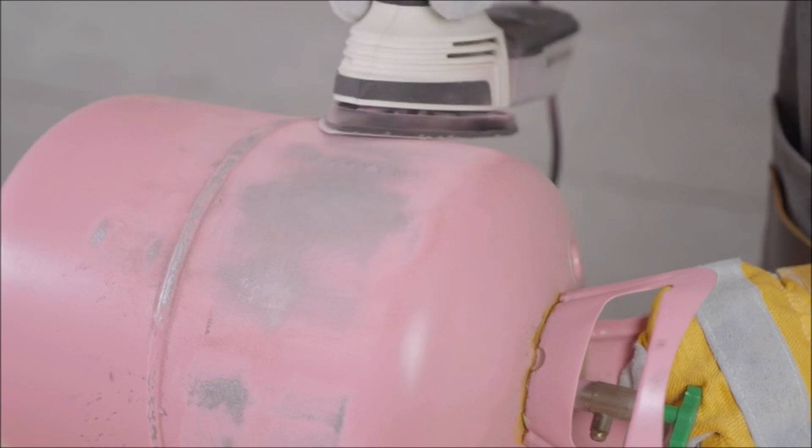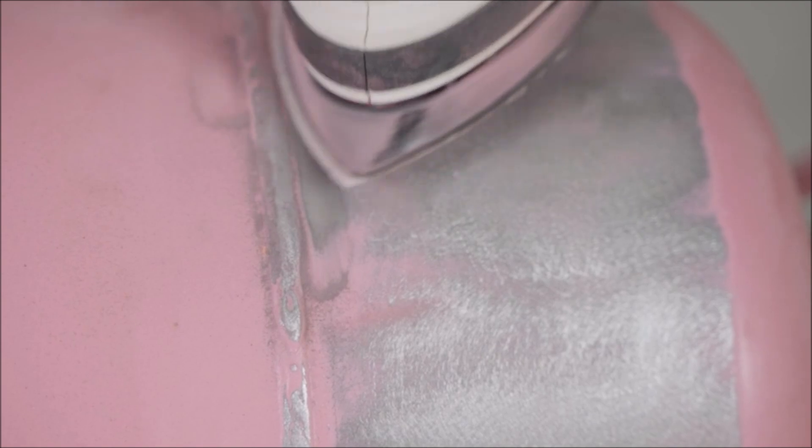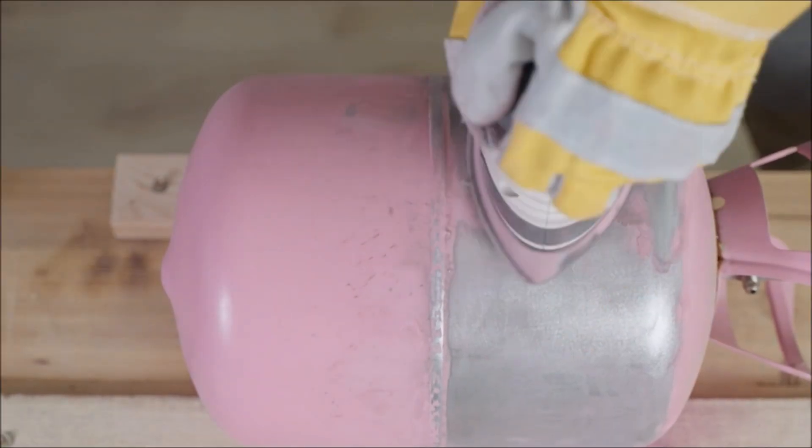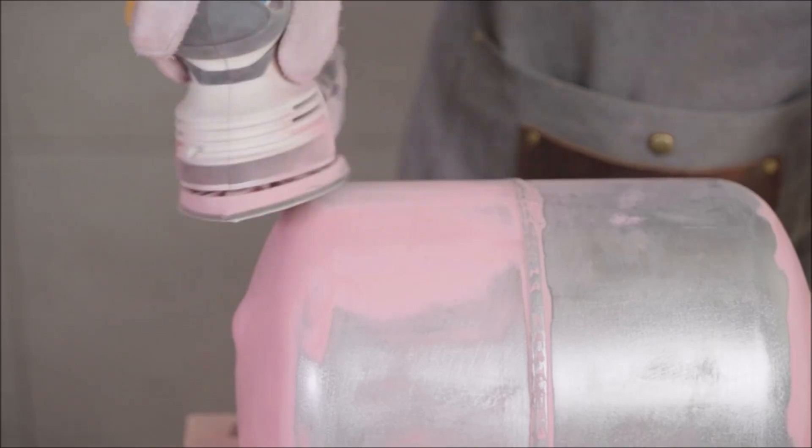Compact size gets into tight spaces and maximizes user control. The sanding base with Velcro for a quick change of sandpapers, the orbital action provides a virtually swirl-free finish and simple push-on, off-switch to start or power the hand sander off.